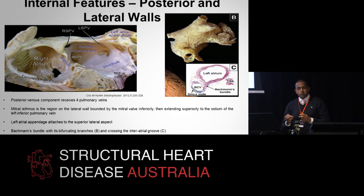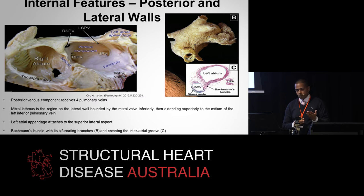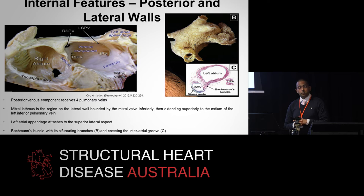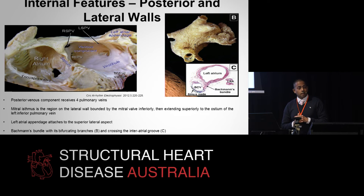Moving on to the posterior and lateral walls: the posterior venous component receives the four pulmonary veins — right superior, right inferior, left superior, and left inferior. An interesting point is the mitral isthmus, which is the region on the lateral wall bounded by the mitral valve inferiorly and extending superiorly to the ostium of the left inferior pulmonary vein. Electrophysiologists will confirm that this can be a site of ablation for left atrial flutter. The left atrial appendage attaches to the superior lateral aspect of the left atrium.